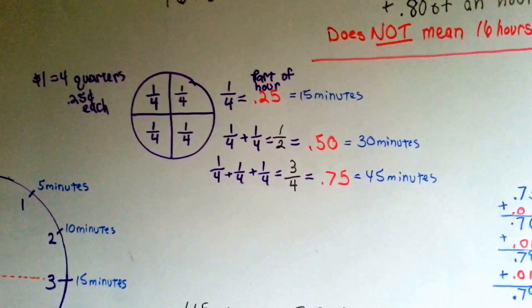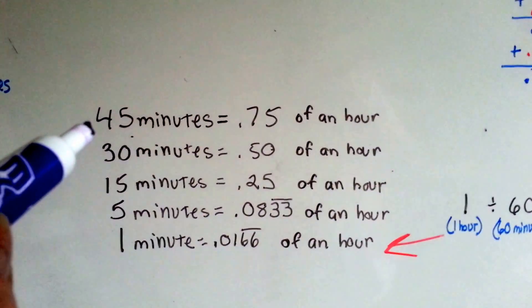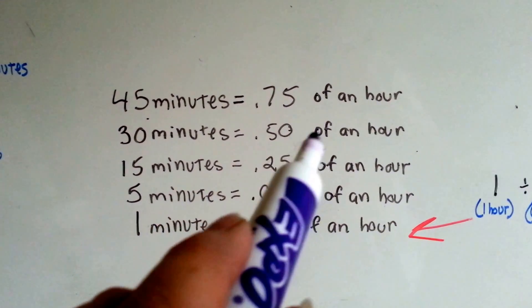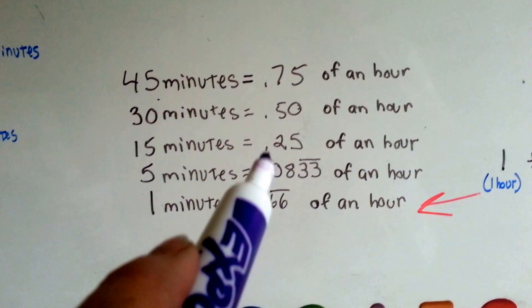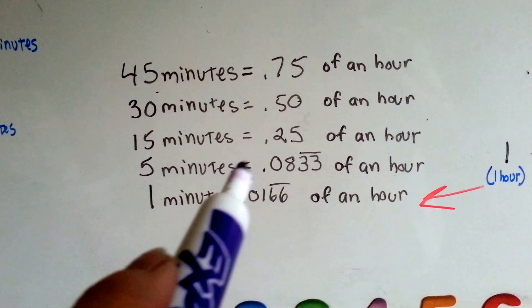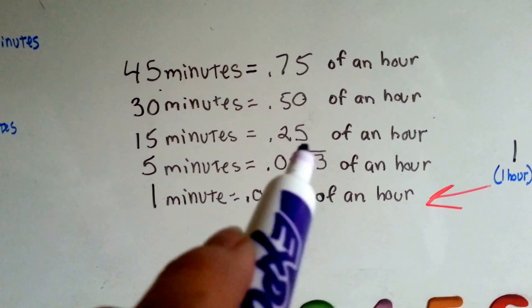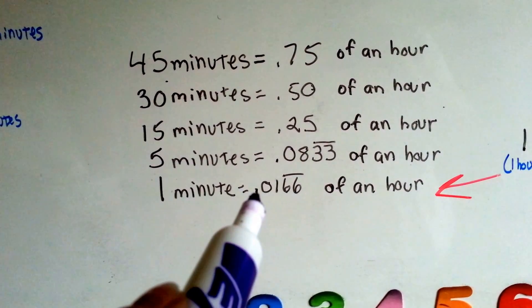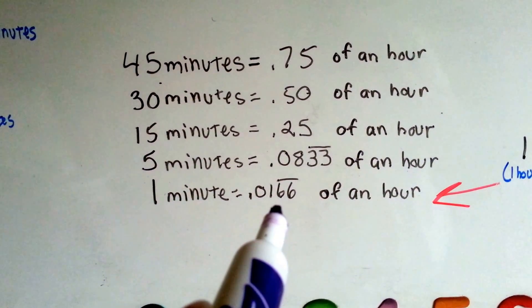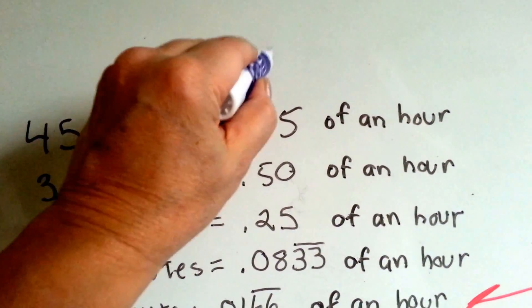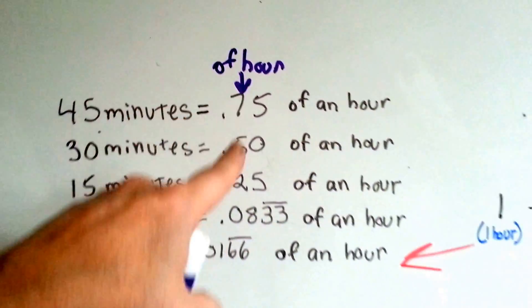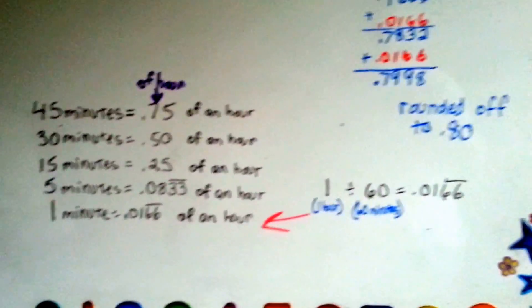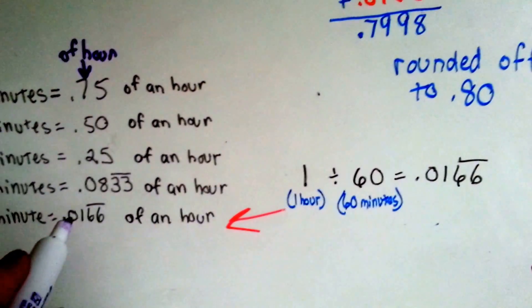So how can someone work 16.8 hours? Well, let's look at this. We now know that 45 minutes is .75 of an hour, 30 minutes is .5 of an hour, 15 minutes is .25 of an hour. Five minutes would be .0833. The reason the line is above here is because the three goes on for a long time, and that's a way of saying the three repeats. One minute turns out to be .0166 of an hour. This is how much of the hour, not money, it's how much of the hour, a decimal point of the hour worked.